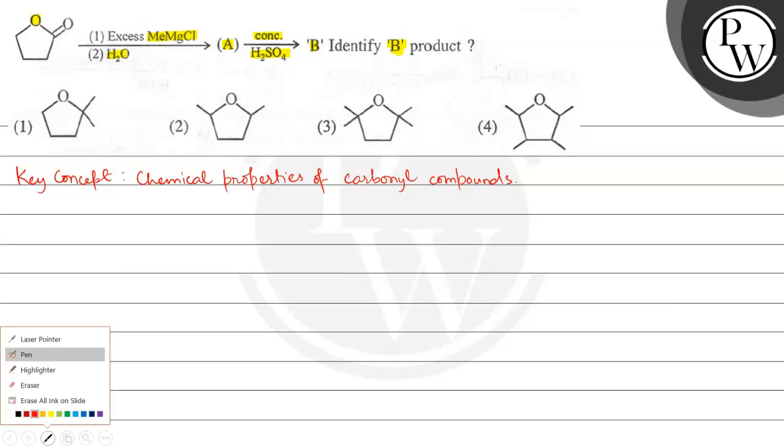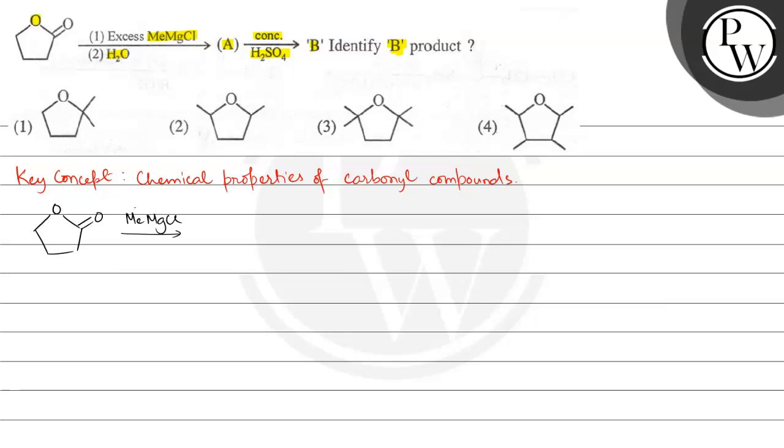Here we have a given substrate, that is an ester. We are adding methyl magnesium chloride, MeMgCl. So first the methyl anion will attack this carbonyl.